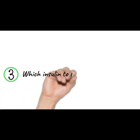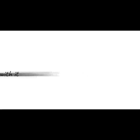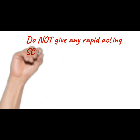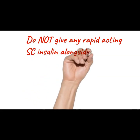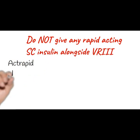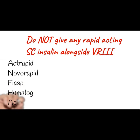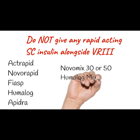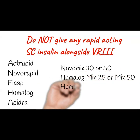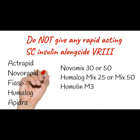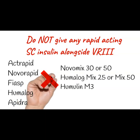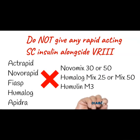Which insulins can be continued with variable rate intravenous insulin infusions and which ones have to be stopped? All rapid-acting insulins have to be stopped when someone has been commenced on VRIII. Some of the common names are Actrapid, NovoRapid, Fiasp, Humalog, and Apidra. Sometimes it may be in mixed form like NovoMix 30 or 50, Humalog Mix 25 or Mix 50, or Humulin M3.